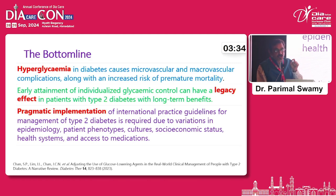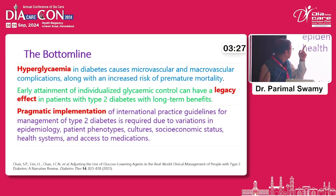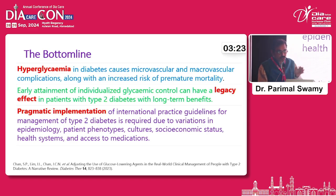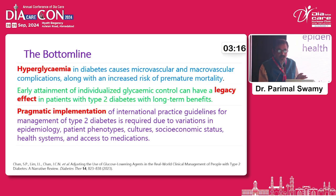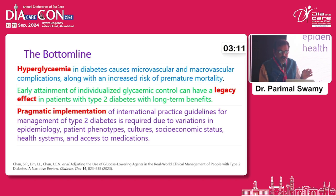The bottom line for practice is that hyperglycemia is important — it kills patients and leads to reduced quality of life and multiple complications. The legacy effect saves patients and improves quality of life, so you need to control hyperglycemia aggressively right from the beginning. Finally, while guidelines exist, we must adjust them according to our own needs and the needs of the patient.